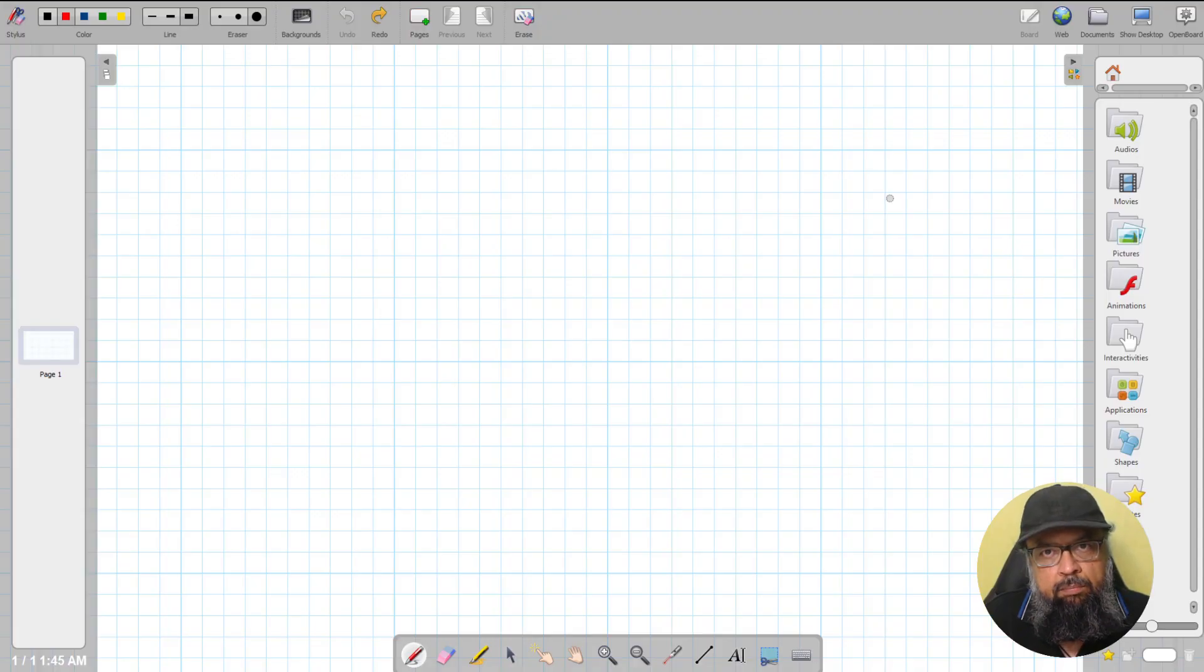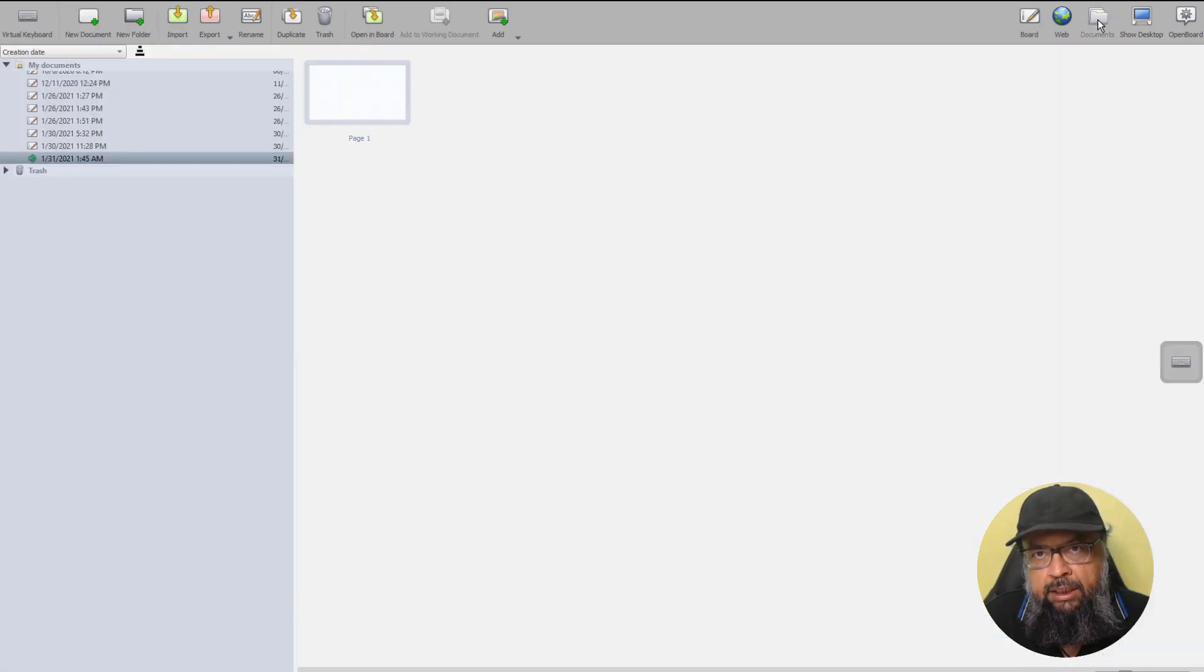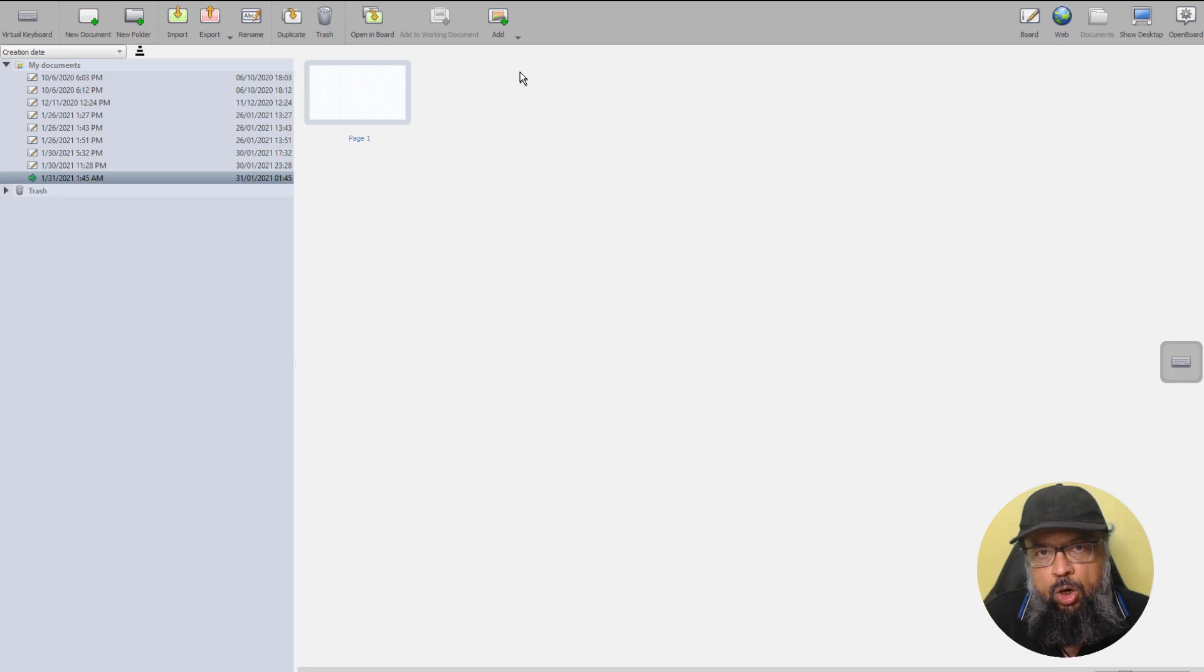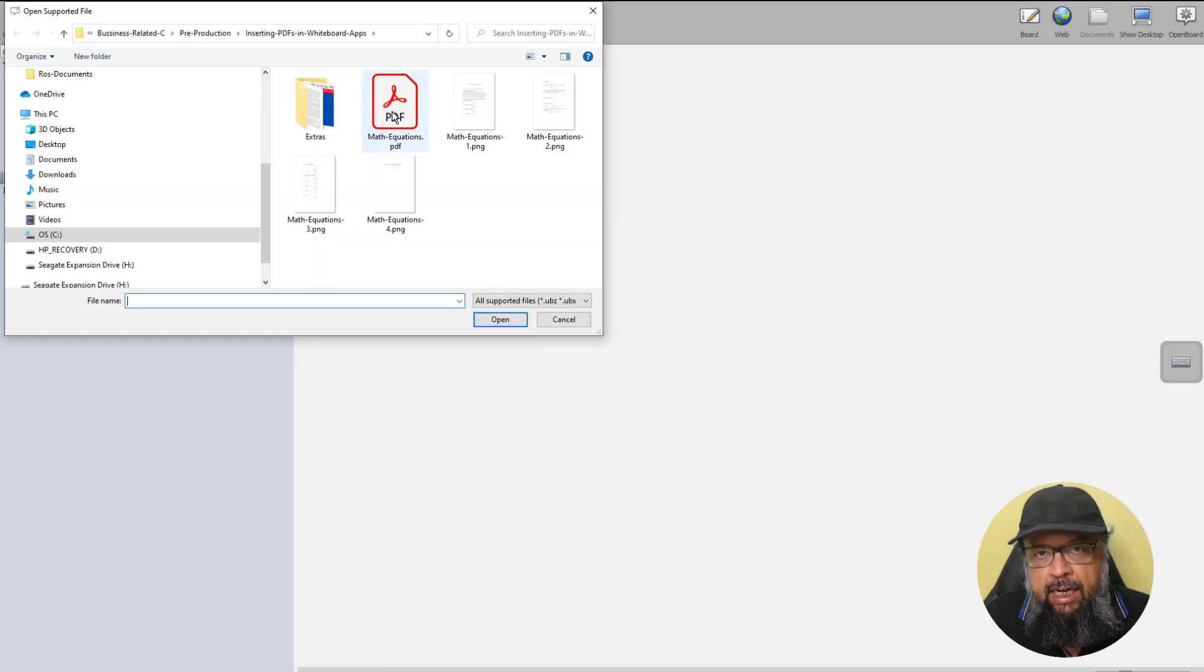Now I have opened my OpenBoard whiteboard. To insert a PDF in OpenBoard, you click on these documents. And now you can click either on Add or Import button. So let's click on Import and I select this PDF. And I click Open.